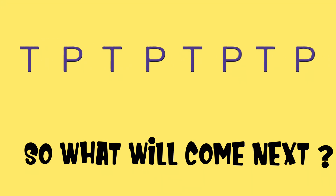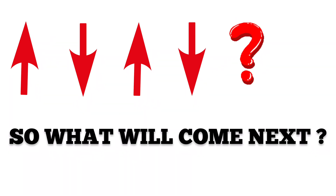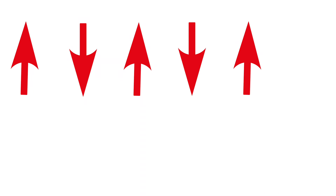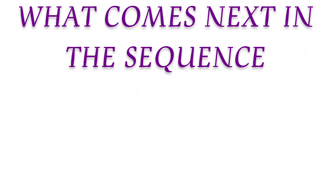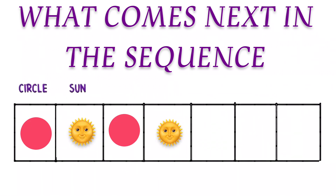Upside arrow, down arrow, upside arrow, down arrow — so what will come next? Upside arrow, down arrow. Square, triangle, square, triangle — so what will come next? Square, triangle.